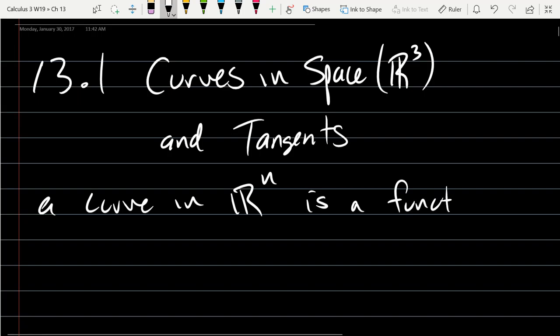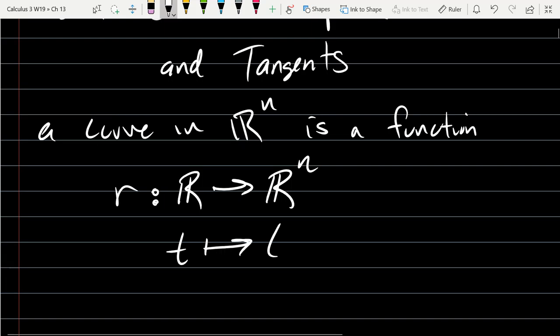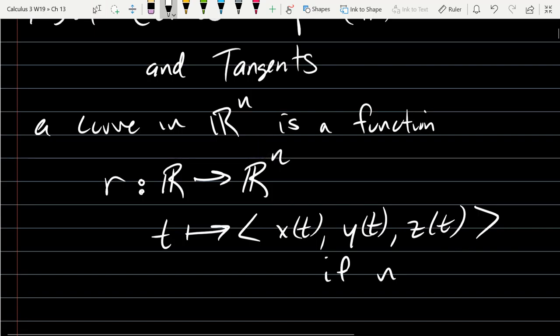We've seen curves before. A curve in Rⁿ is a function. We'll use R for the curve. Its domain is R and its range will be Rⁿ. It sends some time value or t parameter to x of t, y of t, z of t. When you think about it like this, this is what it looks like in three dimensions.